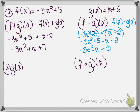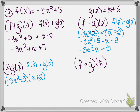The next one we are multiplying: f times g of x, which is f of x times g of x. So we're going to take negative 3x squared plus 5 and multiply that times x plus 2. Negative 3x squared times x gives negative 3x cubed, negative 3x squared times 2 gives negative 6x squared, then 5 times x is 5x, and 5 times 2 is 10. There are no like terms to combine, so that is our final answer.